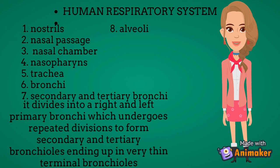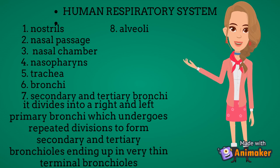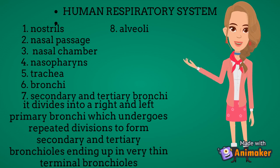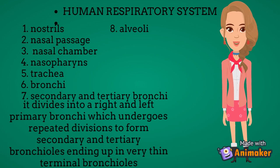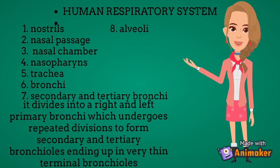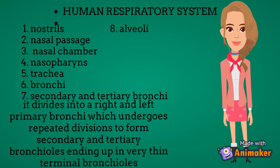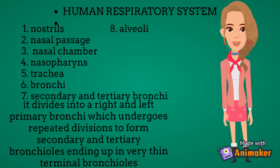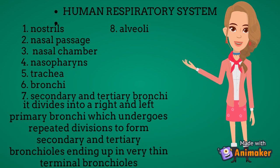The larynx is a cartilaginous box which helps in sound production, hence called the sound box. During swallowing, the glottis can be covered by a thin elastic cartilaginous flap called the epiglottis to prevent the entry of food into the larynx. The trachea is a straight tube extending up to the mid-thoracic cavity.